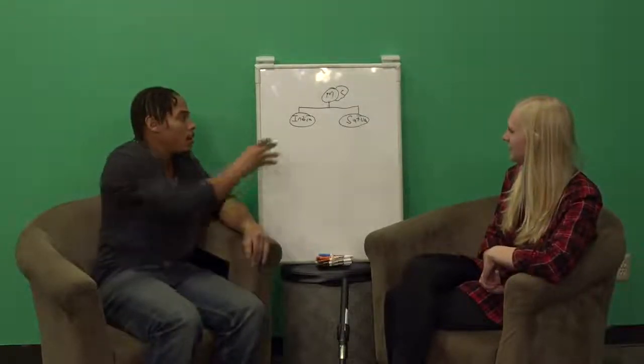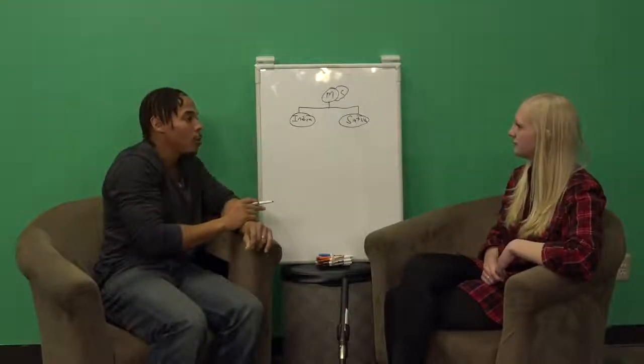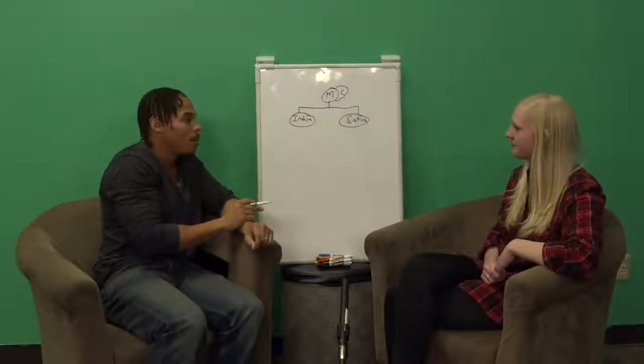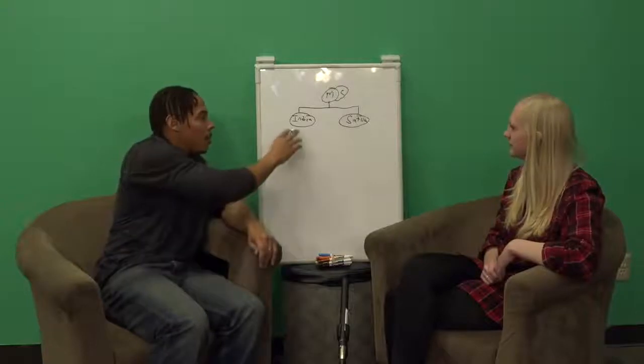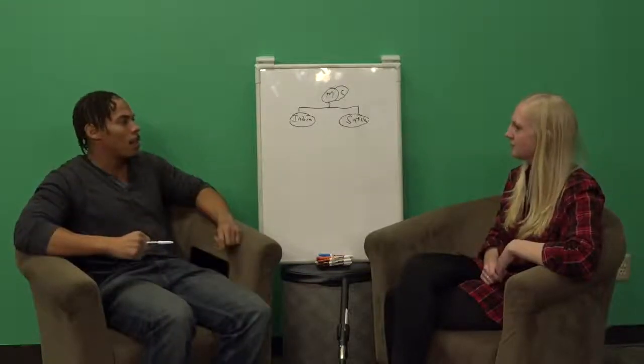But we got to kind of go back a little bit. And I think the best thing I can draw a little bit. Yeah, let's draw a little. So we have marijuana, and then for marijuana we got two branches of species here that we call indica and then we also have another species which we call sativa.